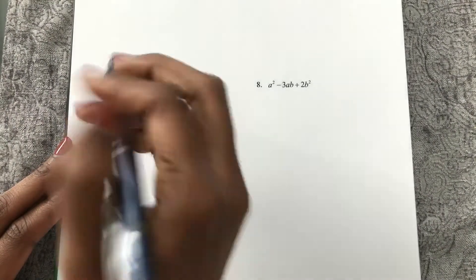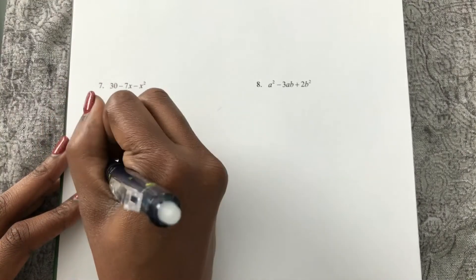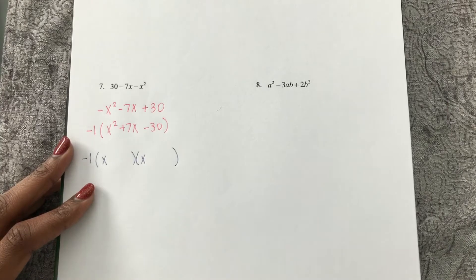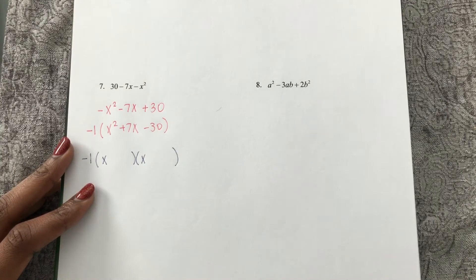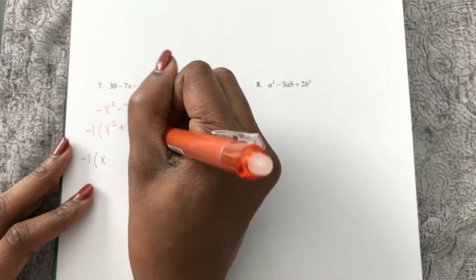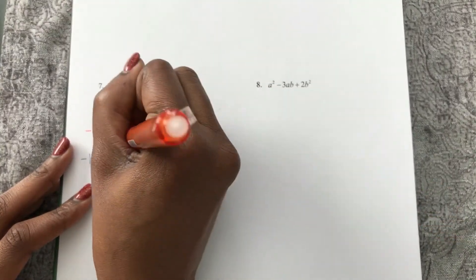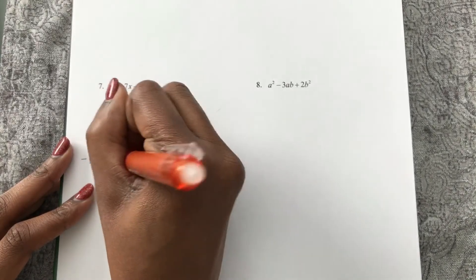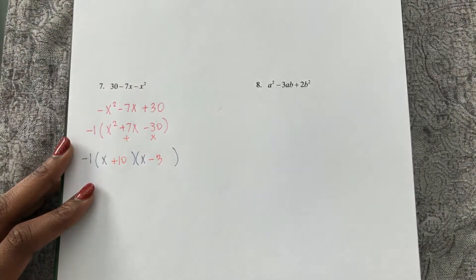So now this trinomial is going to be pretty easy to factor. Since it's x squared first, I know it's x times x for my first terms. And now I'm looking for two numbers that multiply to make negative 30 and add to make 7. Those numbers are positive 10 and negative 3.